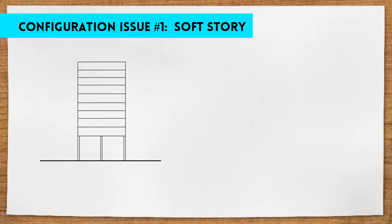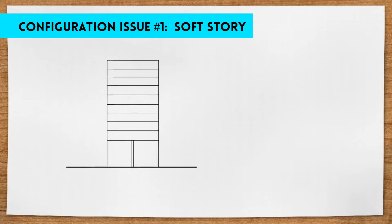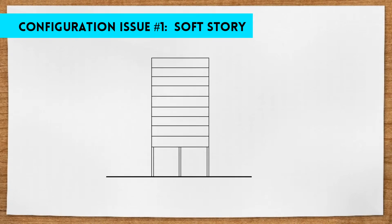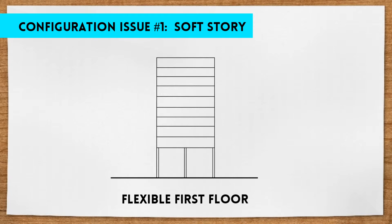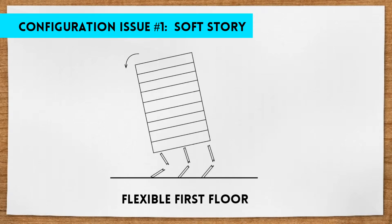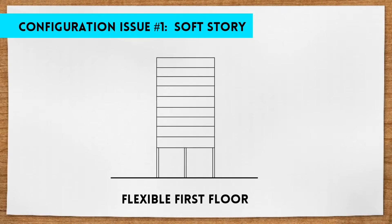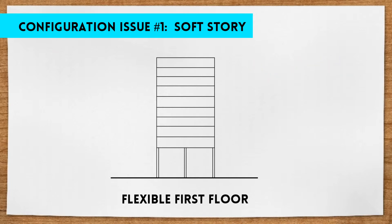There are three major types of soft story situations. The first is the flexible first floor. This often occurs when the first floor ceiling height is way taller than the ceiling height of the stories above it. Think of a big commercial office building or hotel lobby — the ceiling heights are usually taller and more grand. Unless that's carefully accounted for with additional structure, it can create a soft story.